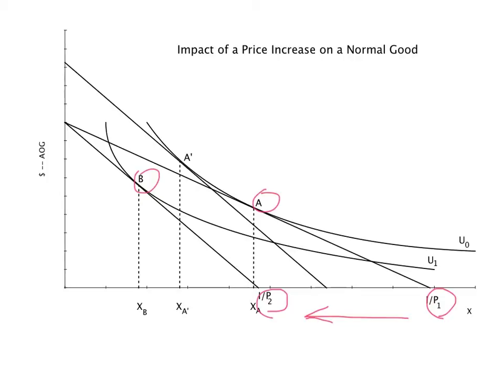The change in income needed to return the consumer to U naught following the price increase is the compensating variation, a measure of the welfare loss to the consumer, that is the lost consumer surplus.